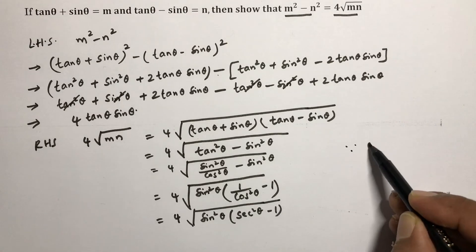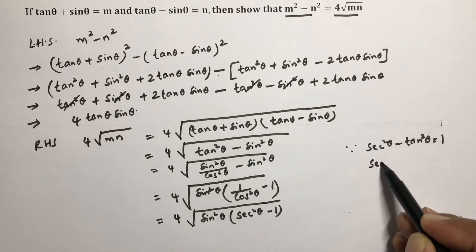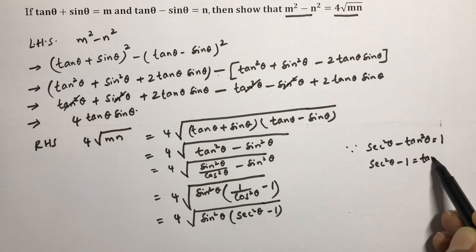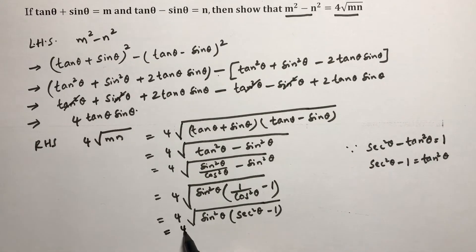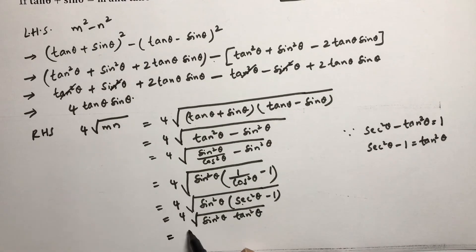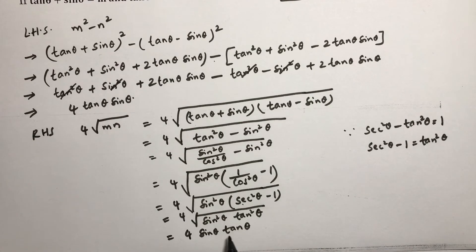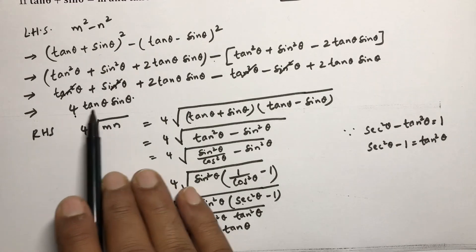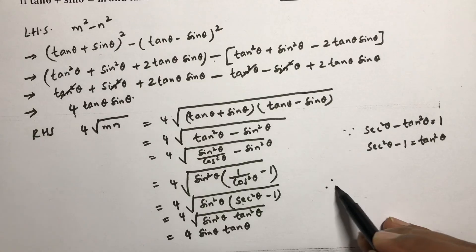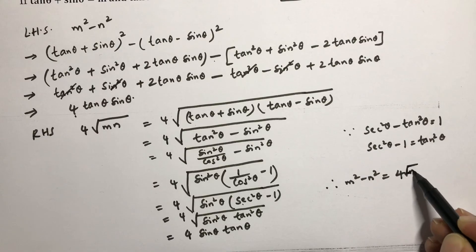Using the identity sec squared θ minus tan squared θ equals 1, we get sec squared θ minus 1 equals tan squared θ. So RHS becomes 4 under root of sin squared θ times tan squared θ. Taking the root: root of sin squared θ is sin θ, root of tan squared θ is tan θ. Therefore RHS equals 4 sin θ tan θ, which equals LHS. Hence, m squared minus n squared equals 4 root mn. LHS is equal to RHS.